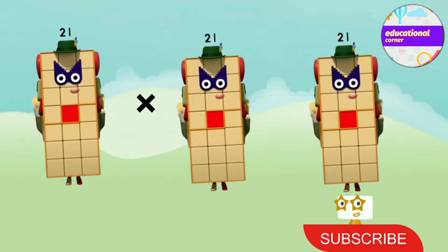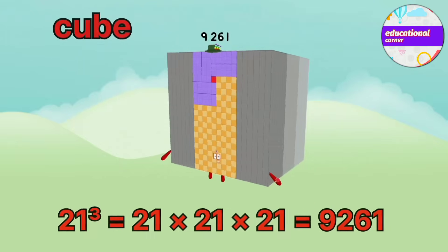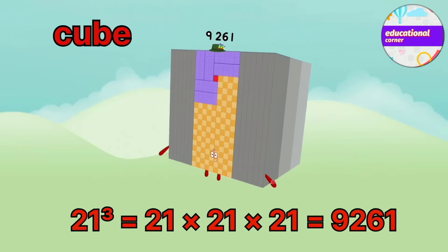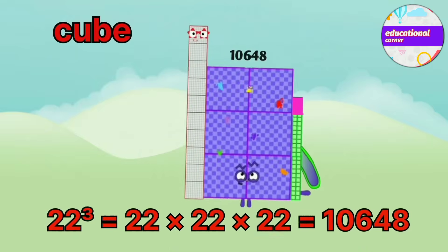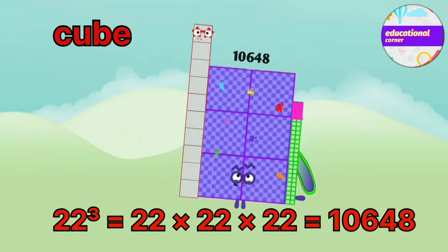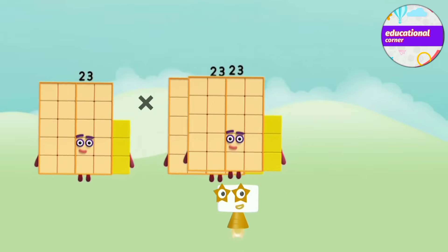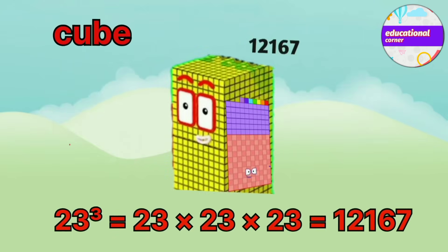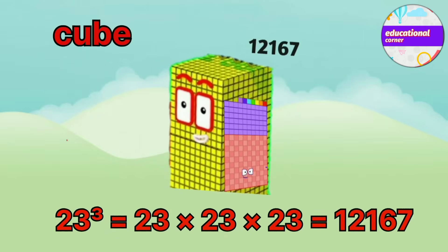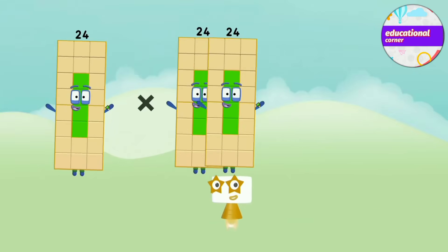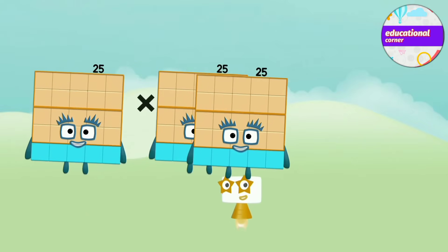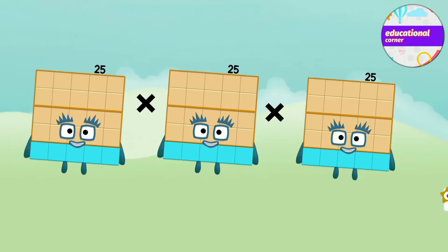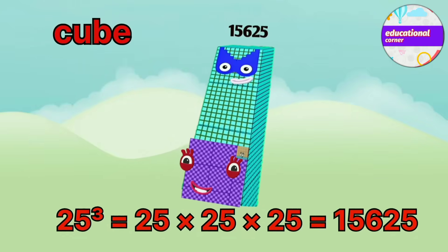21 x 21 x 21 equals 9,261. 22 x 22 x 22 equals 10,648. 23 x 23 x 23 equals 12,167. 24 x 24 x 24 equals 13,824. 25 x 25 x 25 equals 15,625.